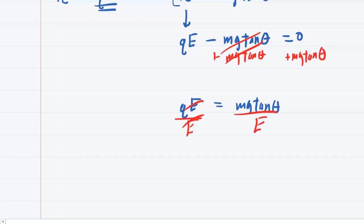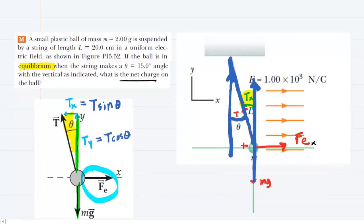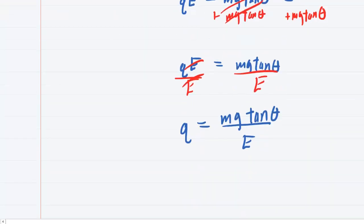So at this point, it will be a matter of plugging in the known values: the mass, gravitational constant, the angle, and the electric field. We should have all those. Let's make sure we do. The mass was 2 grams. Now that's not the proper unit, so you're going to need to write that as 2 times 10 to the minus 3 kilograms. And then we have the length of the string, and the angle is 15 degrees. I'm not sure we need the length of the string. So we'll just plug the mass, the angle, and the gravitational constant in there.